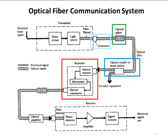When the signal reaches the receiver, its strength is very low. So optical amplifiers are used to amplify the optical signal to an adequate level so that it can be easily detected by the receiver. This is about the complete optical fiber communication system.